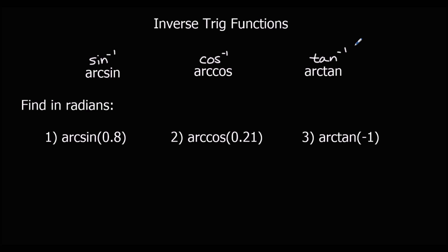So we're going to look at using these now. Find in radians arcsine 0.8. So on a calculator that's shift sine 0.8. Make sure we're in radians, and shift sine 0.8, and to three significant figures we've got 0.927.